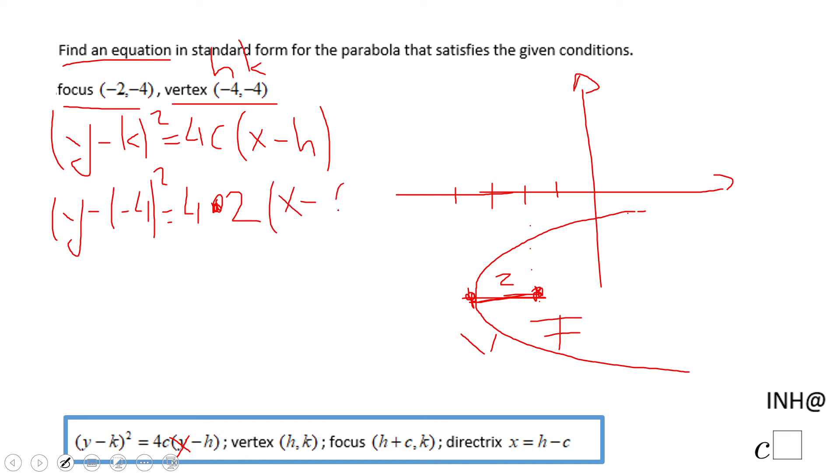x minus negative 4. So we're going to end up here with y plus 4 squared equals 8 times x plus 4.